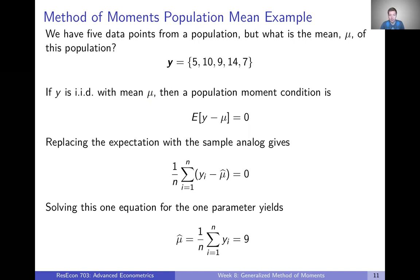If y is iid with mean mu, then in expectation y should equal mu. That's going to give us the simple moment condition: in expectation, y minus mu equals zero. If in expectation y equals mu, we can just move mu inside the expectation and the difference in expectation equals zero. That's simply what a population moment condition is — a function of data y and parameter mu that in expectation equals zero.